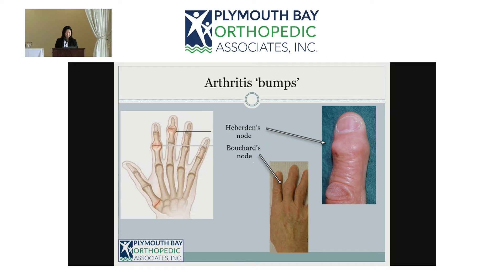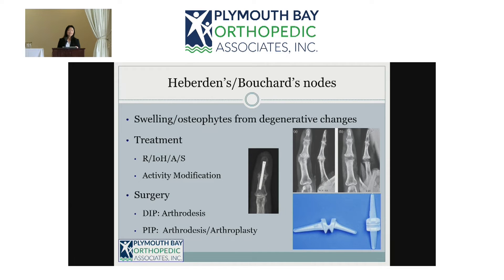On the dorsal part of the hand, bumps are usually from arthritis. At the DIP joints they're called Heberden's nodes and at the PIP joints they're Bouchard's nodes. This is associated with arthritis — you get joint swelling and bone spur formation, and it's really the bone spurs that cause these bumps. Treatment is the usual: rest, ice or heat, and anti-inflammatories.